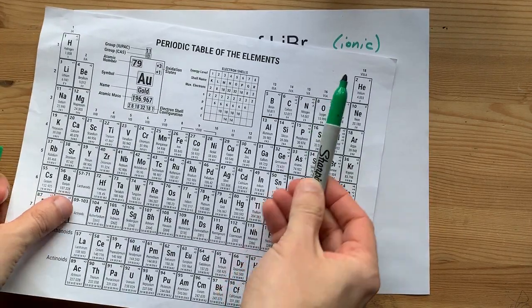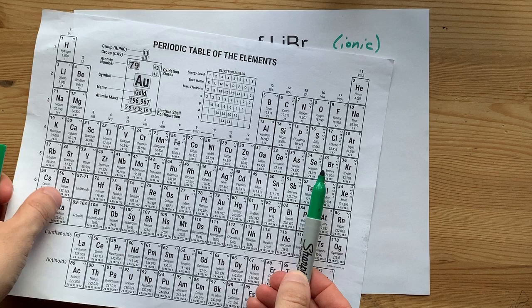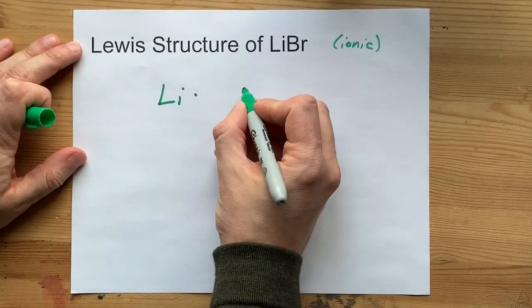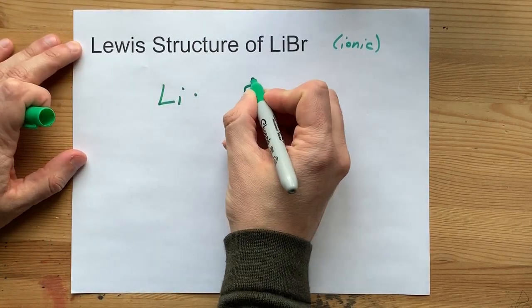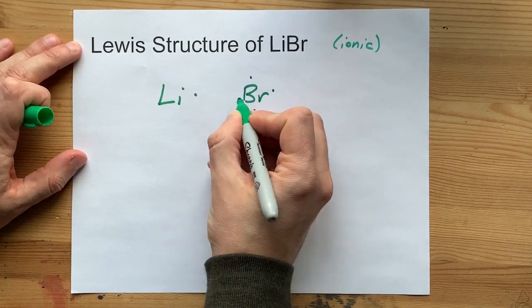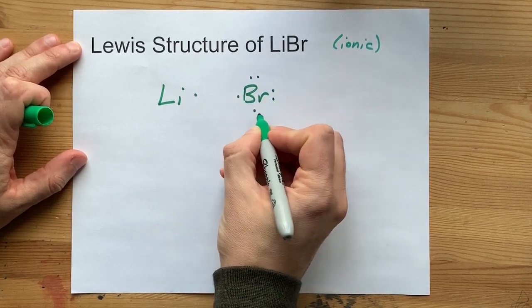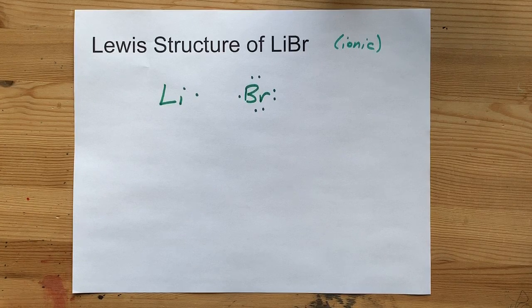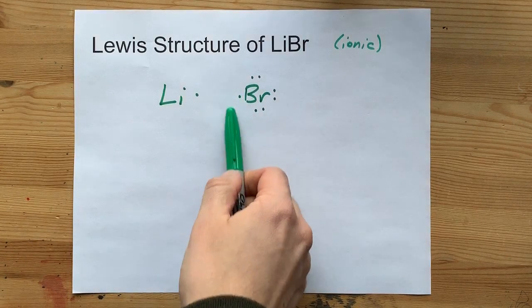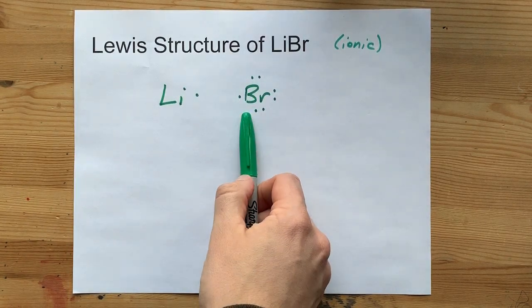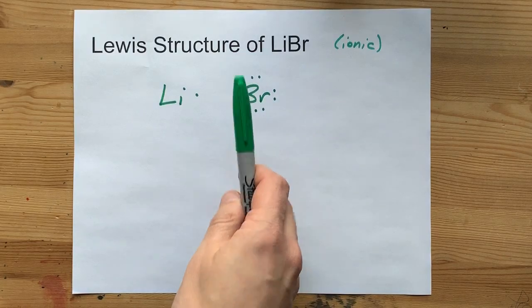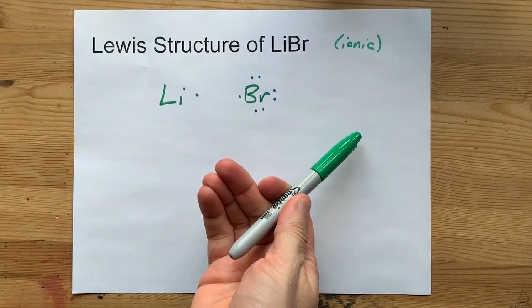Bromine is in column 17, which we say has seven valence electrons. So there's my Br, one, two, three, four, five, six, seven valence electrons. Now bromine wants eight electrons around it, that's what would give it a full valence shell, octet rule.